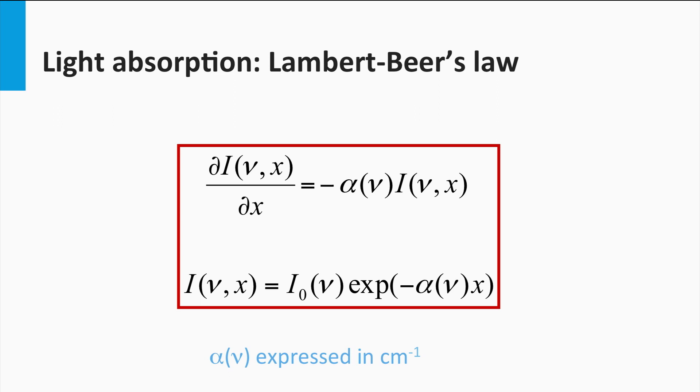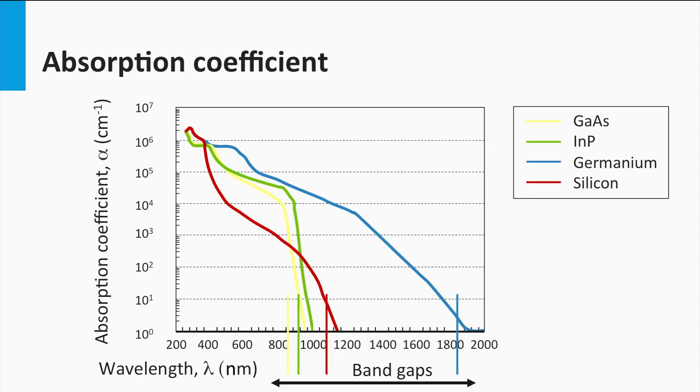It is important to realize that the absorption coefficient for materials is not the same at every wavelength. In this figure, the absorption coefficients for four different semiconductor materials are plotted: germanium, silicon, gallium arsenide and indium phosphide.